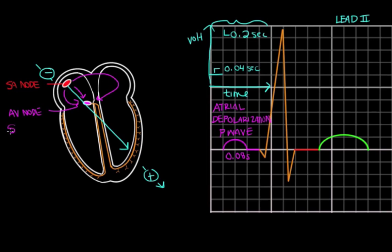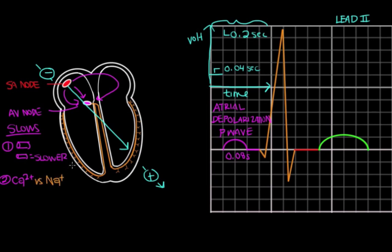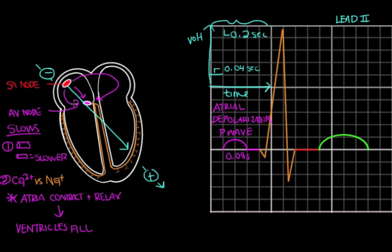After the signal reaches the AV node, conduction slows down. This is for a couple of reasons. One is that AV nodal cells are smaller in diameter than other cells, and as a rule, the smaller the diameter of the cell, the slower the conduction. In fact, AV nodal cells are among the smallest diameter cells in the body. Also, conduction runs primarily through calcium channels in the AV node, and calcium channels have inherently slow kinetics, in contrast to the fast sodium channels seen in the ventricular conduction system. This delay in conduction is really important because it allows time for the atria to contract and relax, which optimizes the time for the ventricles to fill.